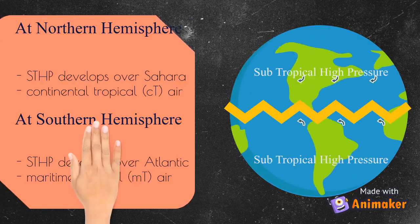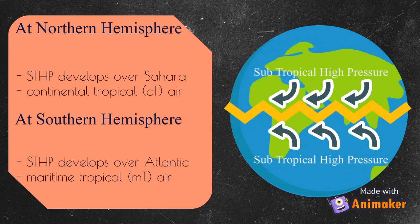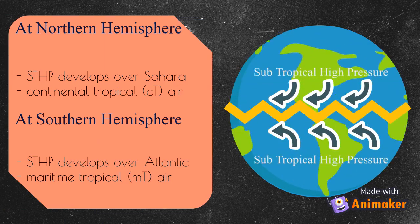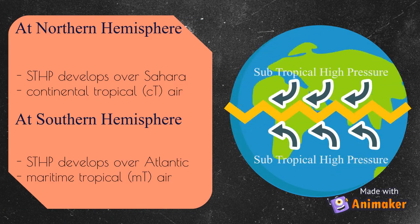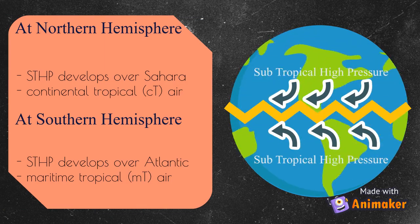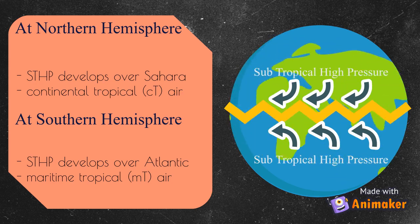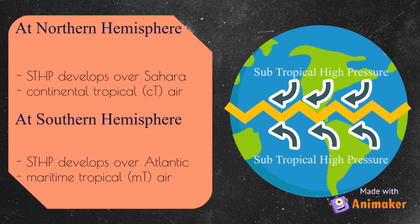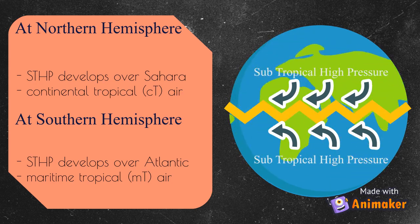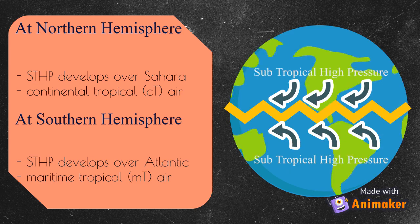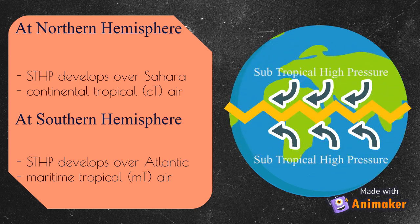In the Northern Hemisphere, subtropical high pressure develops over the Sahara and this area brings dry air towards the lower latitudes, while in the Southern Hemisphere, the STHP develops over the Atlantic and it brings moist air.